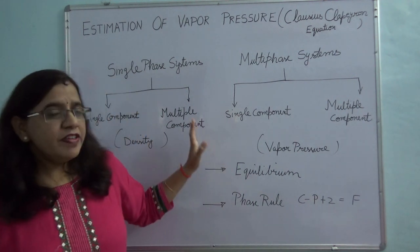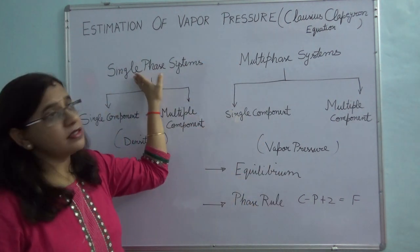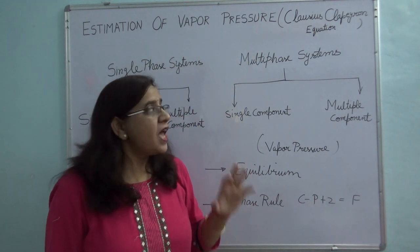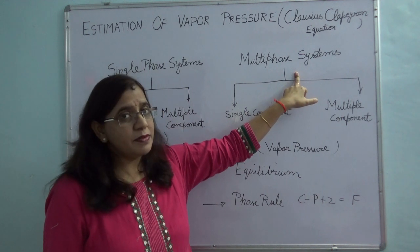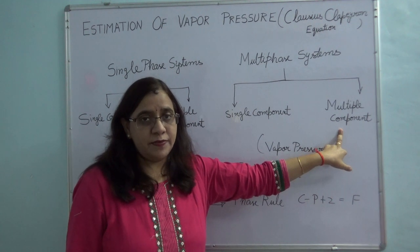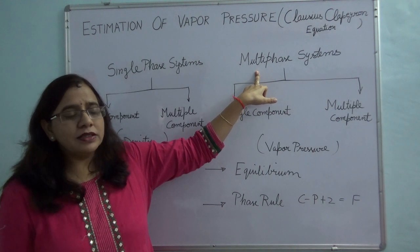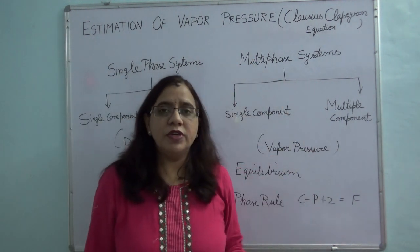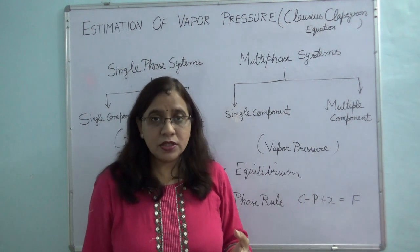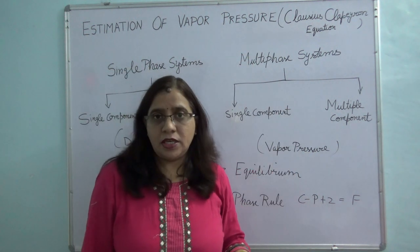Moving ahead, often in industries we do not encounter single phase systems alone. Most of the time what you have is a multi phase system, and in a multi phase system as well you can have a single component system or a multi component system. Some examples of a single component multi phase system can be encountered while you are doing condensation, evaporation, or freezing. All these processes may involve a single component but phase change is taking place.